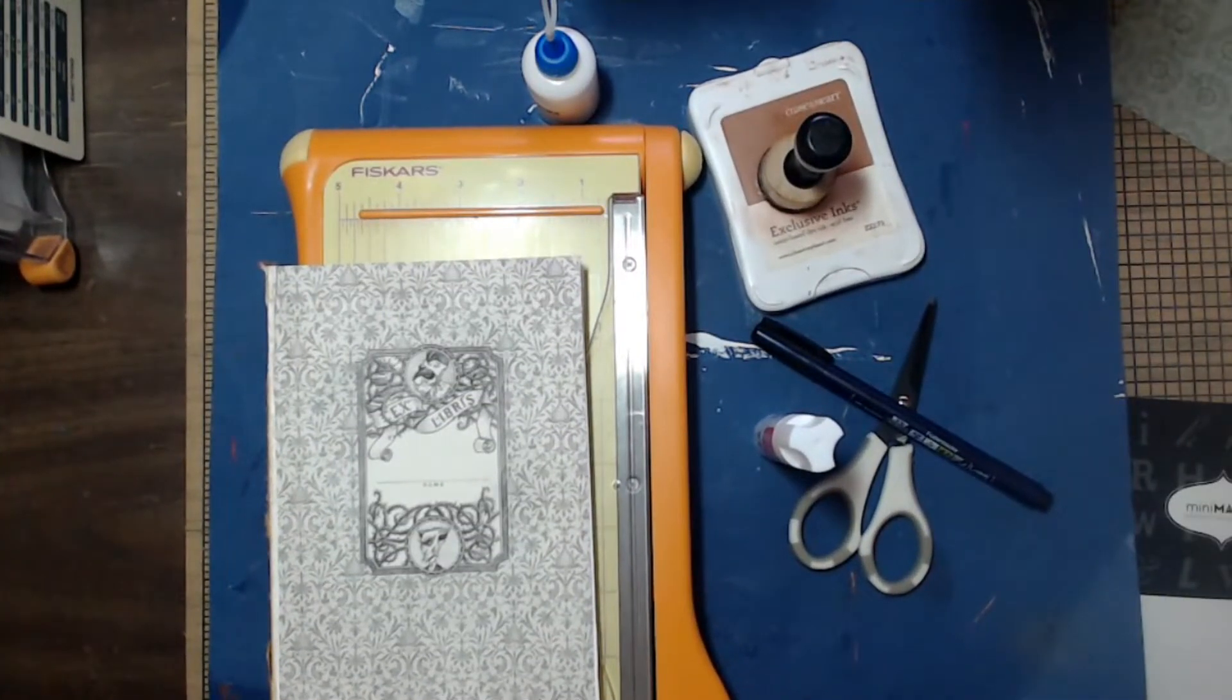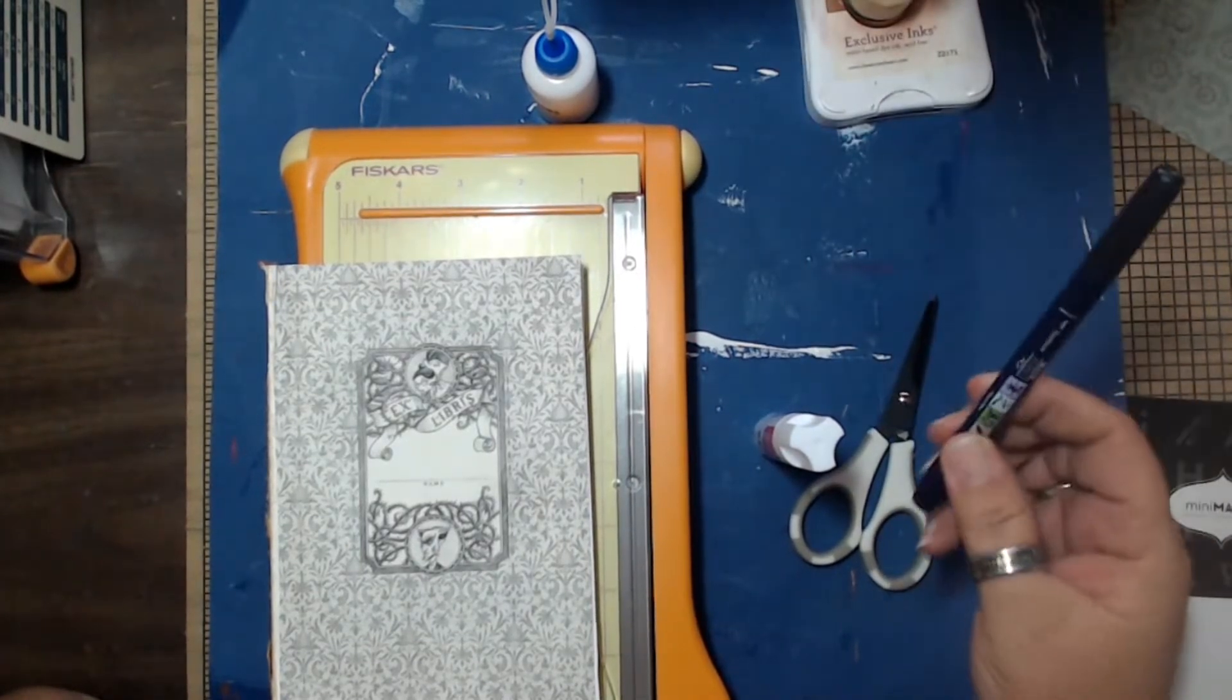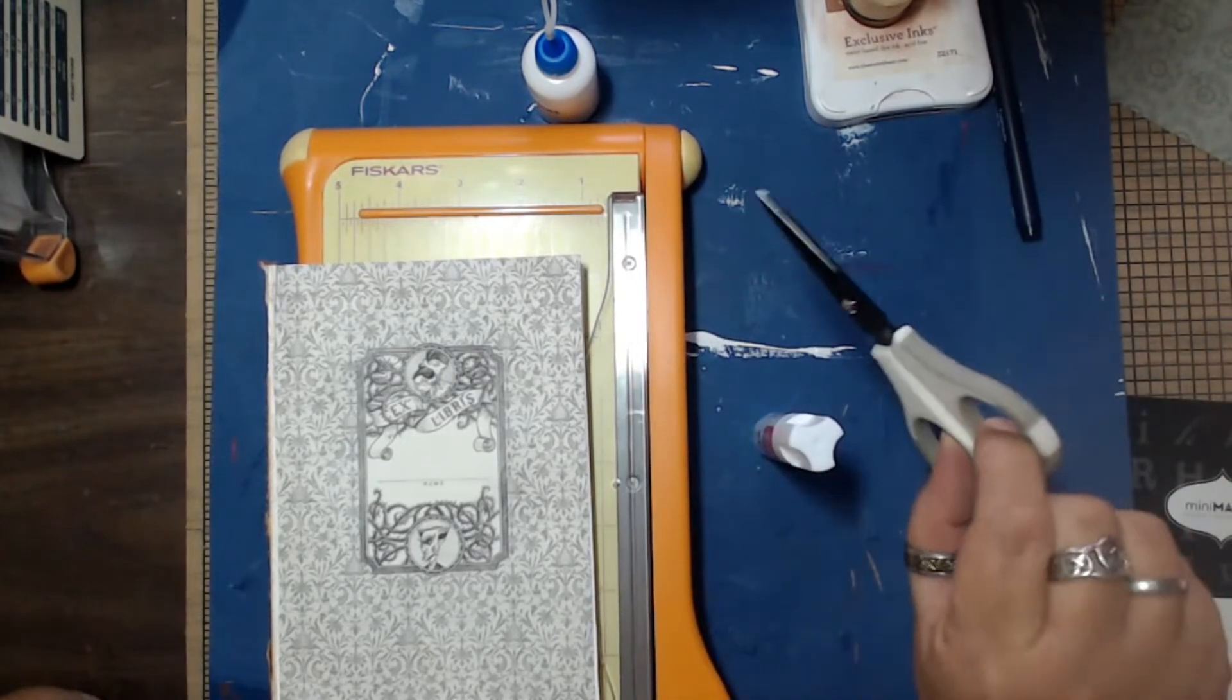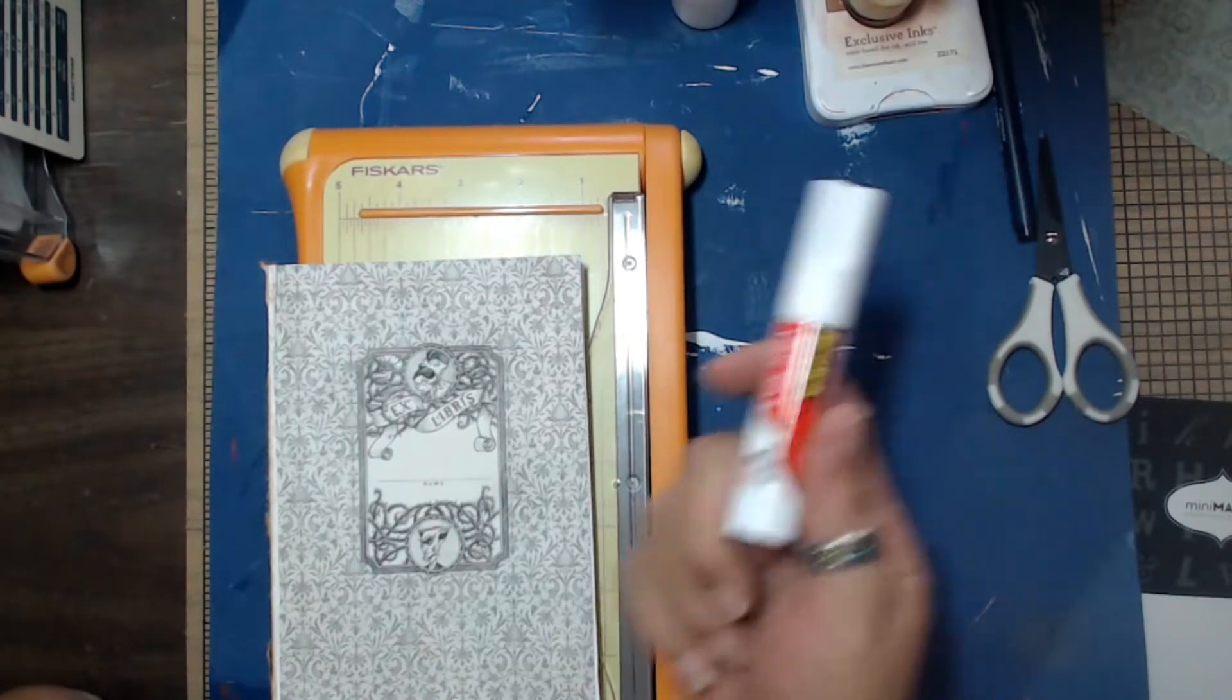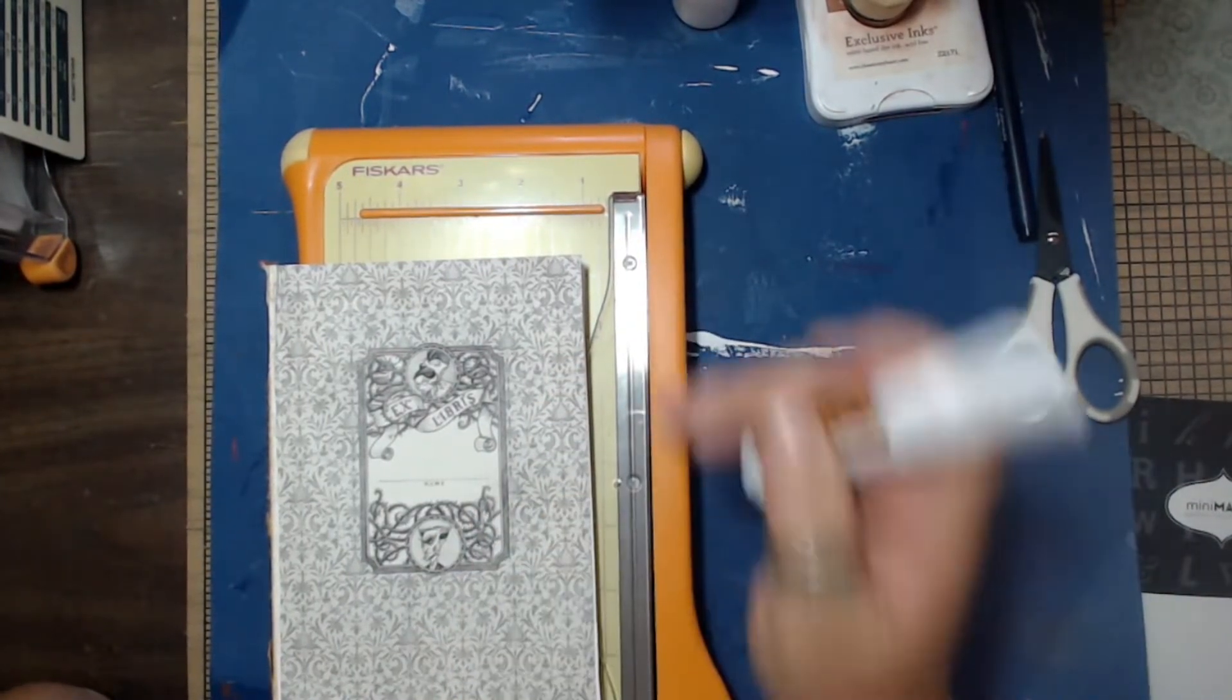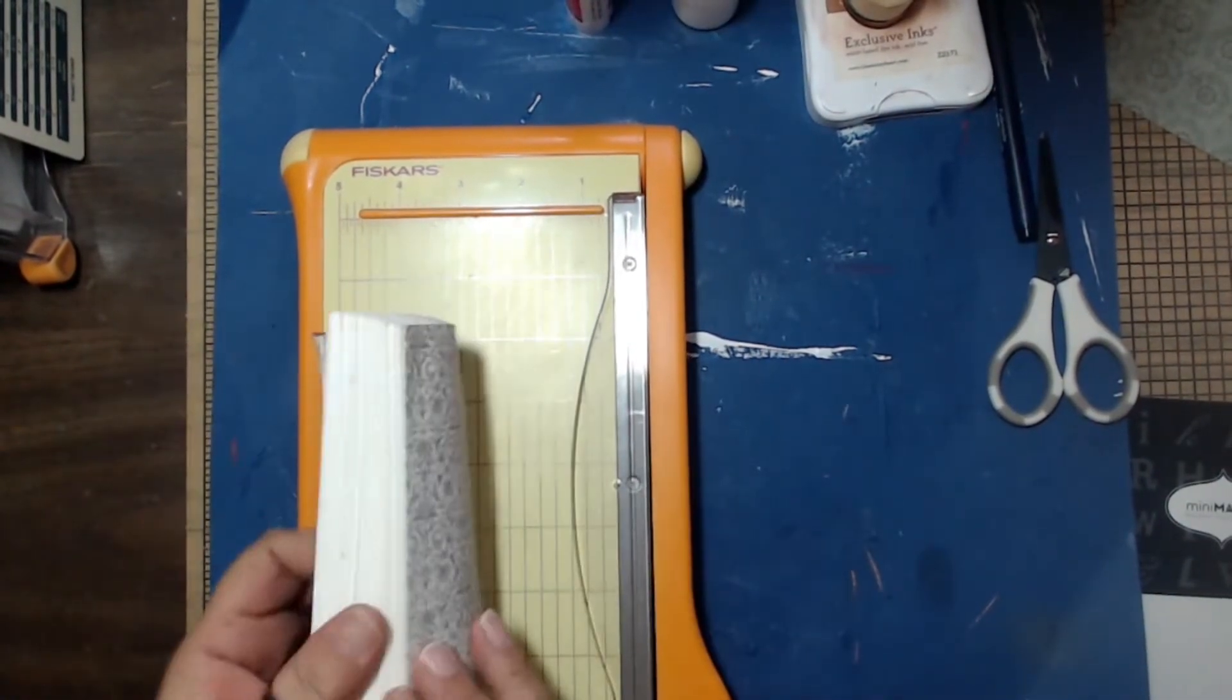Supplies on this one: dauber ink, a fine tip black pen, preferably something that doesn't bleed, a pair of scissors, glue, a glue stick. I know, right? Paper trimmer and some pages from a book.